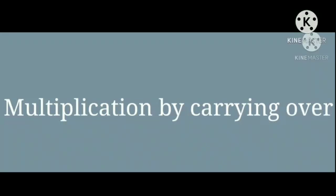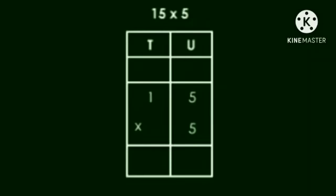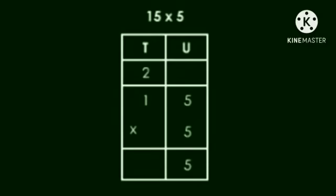Multiplication by carrying over. 15 into 5. Starting the multiplication from the units place. 5 into 5, 25. 25 means 5 units and 2 tens. So, we will carry over 2 tens to the 10s place.